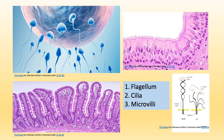Cilia and flagellum are motile — that means they move. The flagellum is designed to move the cell itself; it acts as a propeller. Flagellum is the singular form and flagella is the plural. The cilia move like a whip, in a forward-backward motion, and move substances over or around the cell. Microvilli do not move, so they are immotile. However, they increase the surface area for a greater rate of absorption of nutrients.